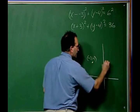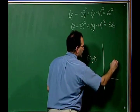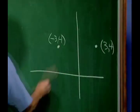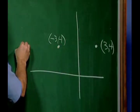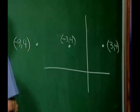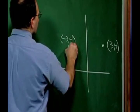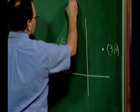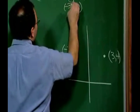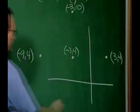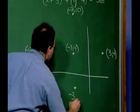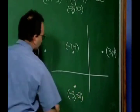So if I go six units in this direction, that's going to take me to the point (3, 4). If I go six units in this direction, it's going to take me to the point (-9, 4). And if I go six units up, it's going to take me to the point (-3, 10). And if I go six units down, it's going to take me to the point (-3, -2).